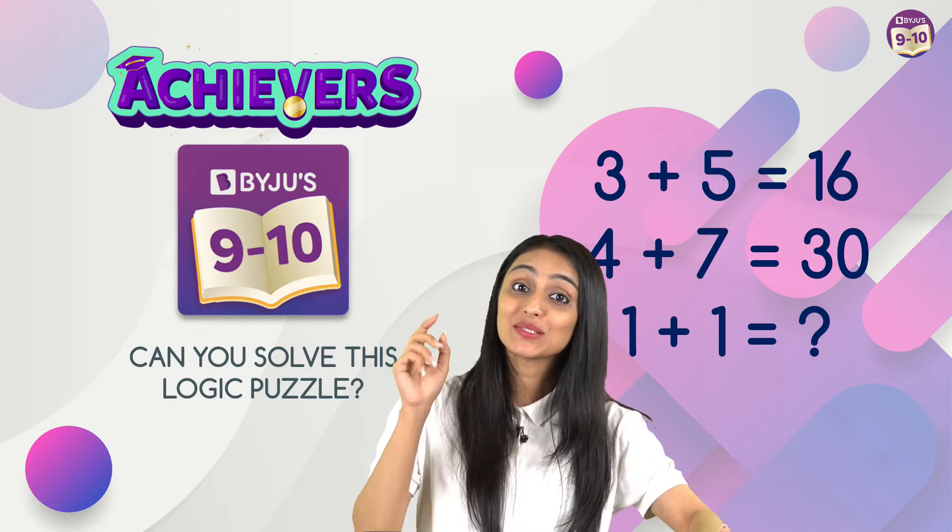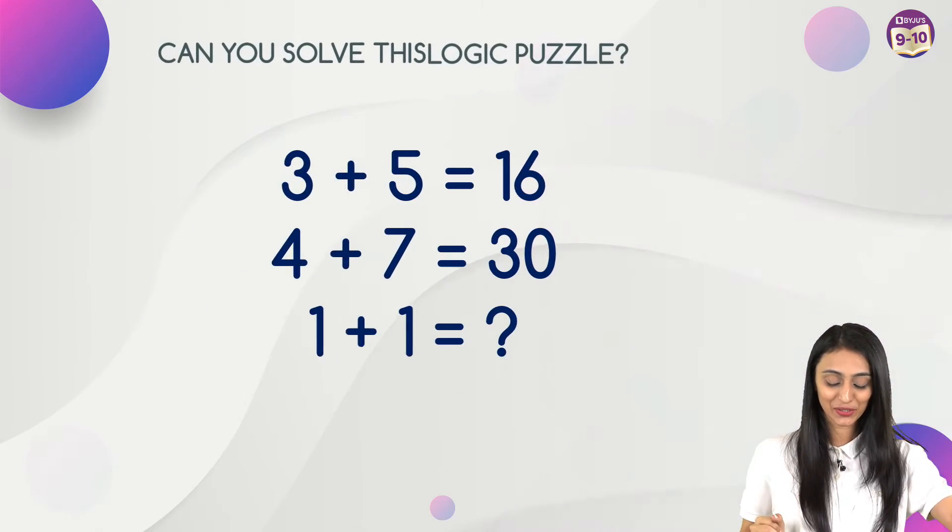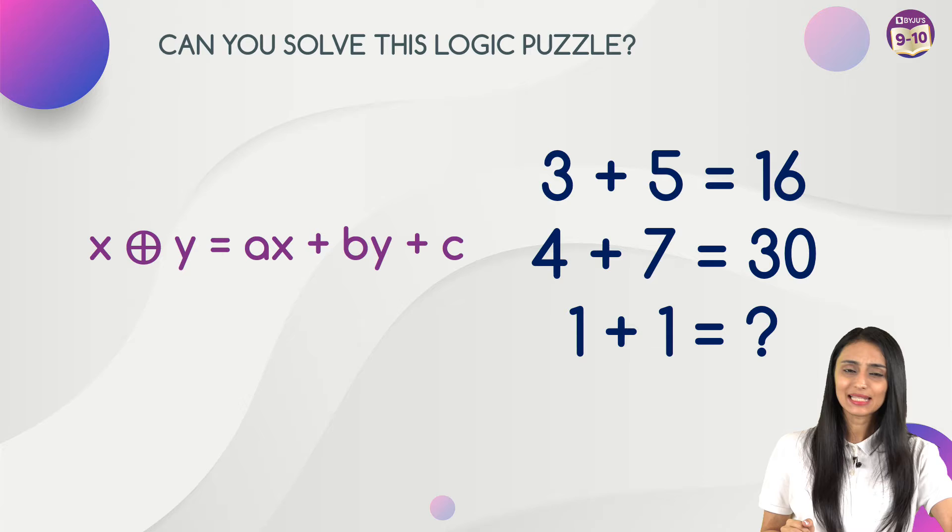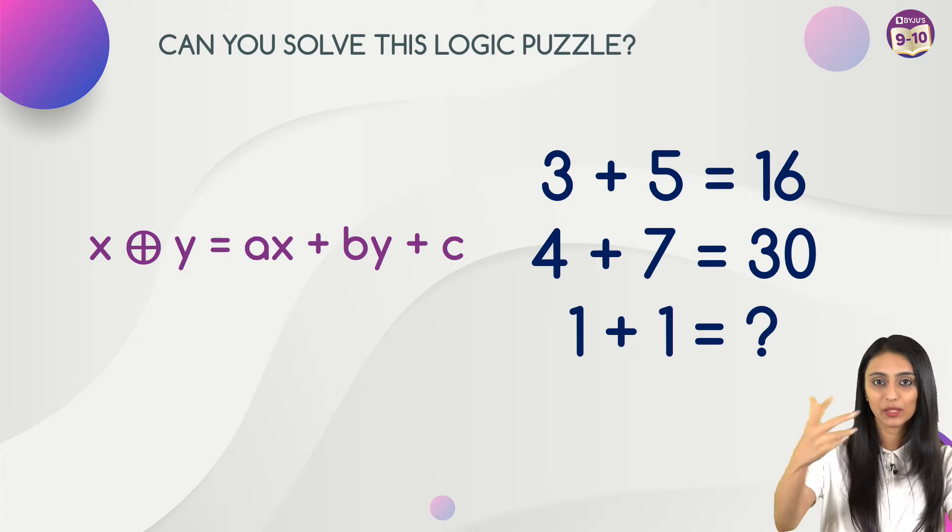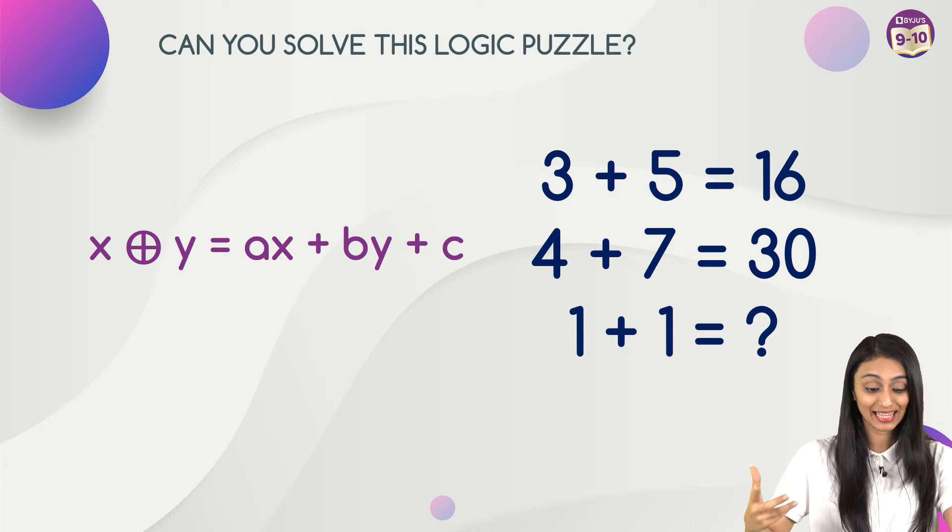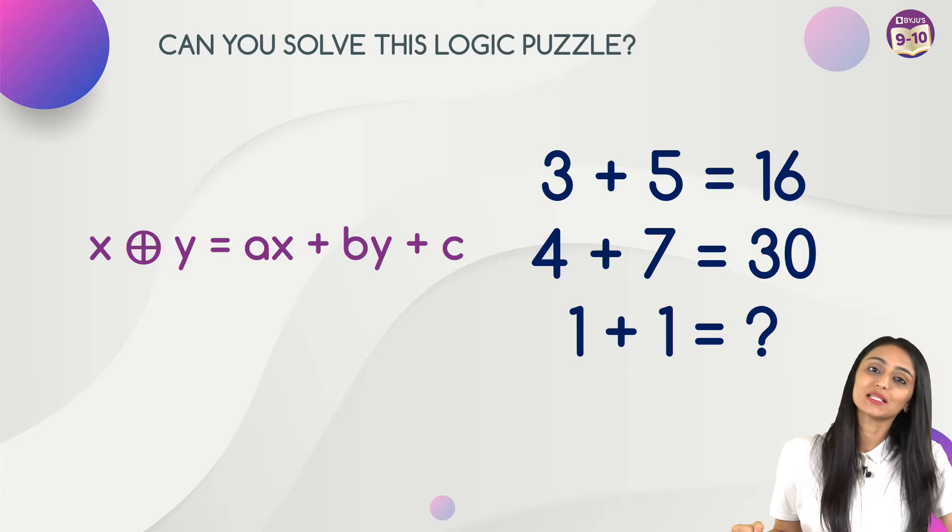But what we need to do is figure out what the pattern is here. So I am going to use an operator. Let's suppose that x and y are connected using an operator, this actually shows the direct sum, which equals ax plus by plus c.